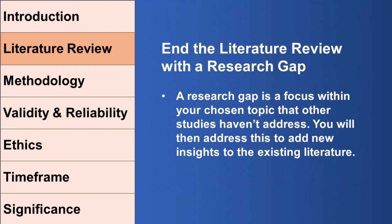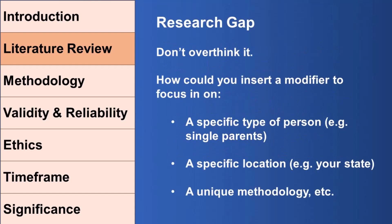You would then want to end your literature review with what we call a research gap — a statement of what hasn't been covered by the literature yet. My students always find this one the most difficult point because they think they need to find a brand new study that's never been done before. What I generally recommend is to choose a topic that you find interesting, and you can always find a research gap by inserting modifiers within your research question to zoom in on a focus that hasn't been covered.